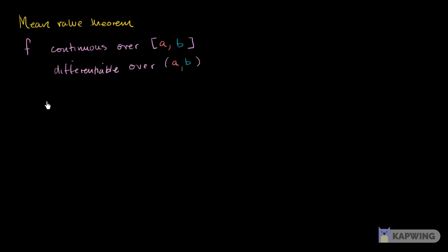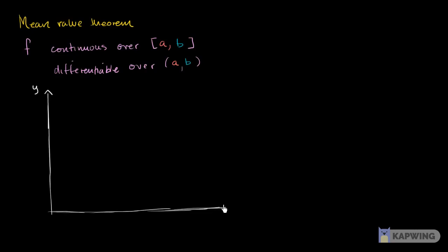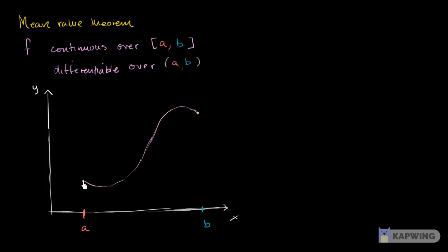So let's just try to visualize this. This is my function — that's the y-axis and this is the x-axis. Let me draw my interval: that's a, and then this is b right over here. So let's say our function looks something like that. This point has x-value a and y-value f of a.